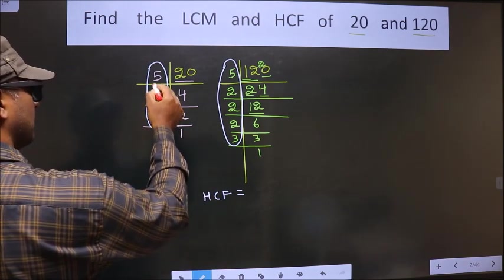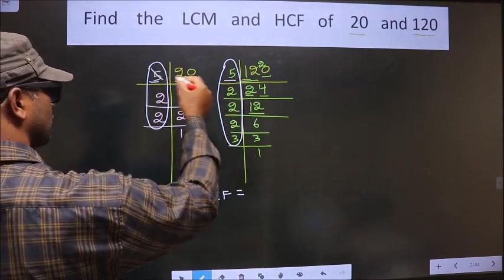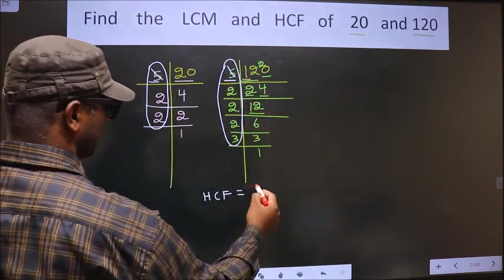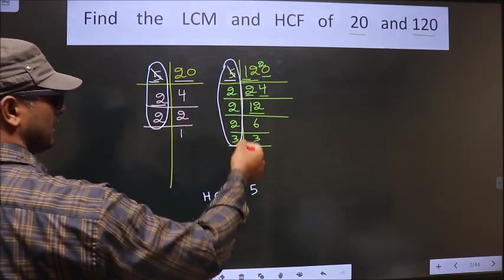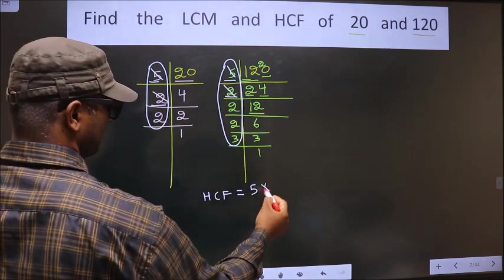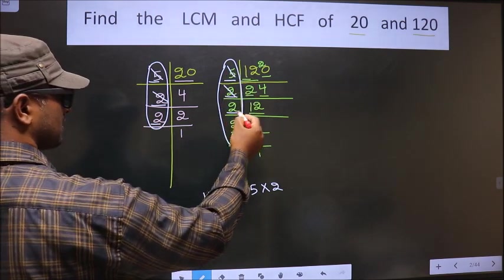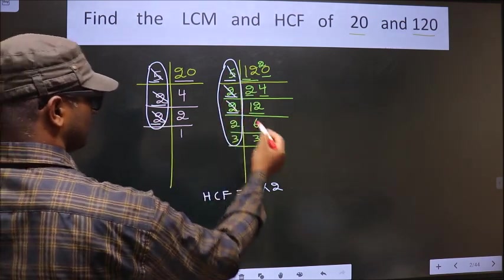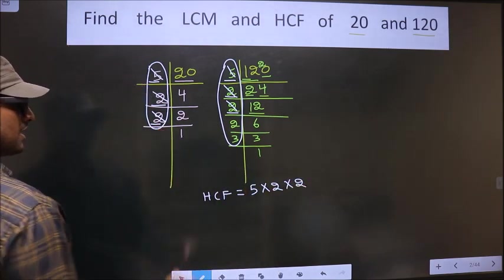So let us find. Starting with the number 5. Do we have 5 here? Yes. So you cut 5 right here. Next number is 2. Do we have 2 here? Yes. So you cut 2 right here. Next number is 2. Do we have 2 here? Yes. So you cut 2 right here. No more numbers are left.